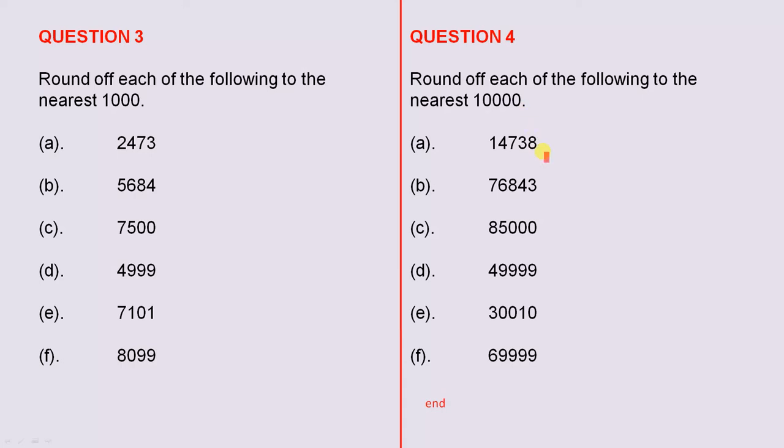We must impress upon students that in the answer, when you write the answer down for each of these with respect to rounding up or rounding down, you must have at least four zeros. Very important.